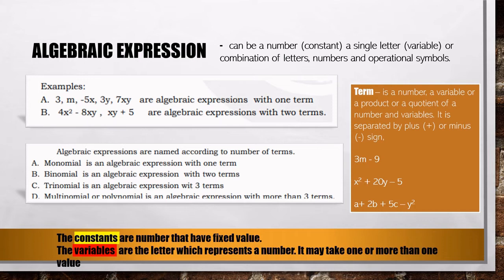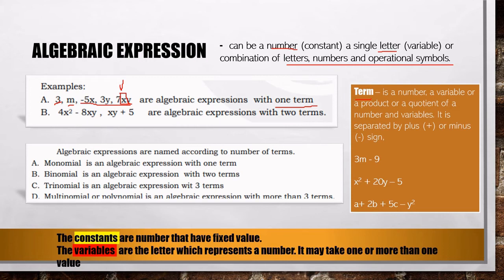What do we mean by an algebraic expression? An algebraic expression can be a number or constant, a single letter or variable, or a combination of letters, numbers, and operational symbols. For example: 3 is a constant, m is a variable, and combinations like −5x, 3y, or 7xy are algebraic expressions. A term is a number, a variable, or a product or quotient of numbers and variables.